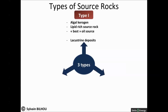Type 1 source rocks, in which the organic matter is mainly of algal origin. They are lipid-rich source rocks and are generally deposited in a lacustrine environment. They tend to be the best crude productive source, but their production is limited by their generally low lateral extension.